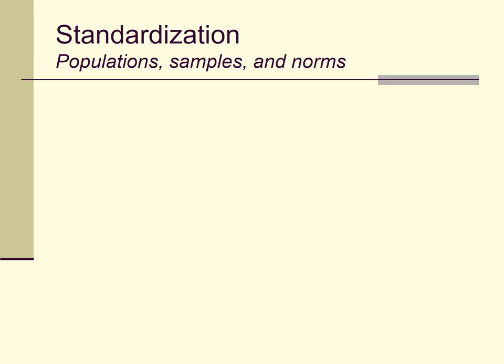Assuming a test developer has identified the population they're studying, they know they can't gather all members of that population to administer the test — that might be practically or even in principle impossible. So they instead choose to sample from that population to estimate important features of the distribution of scores — parameters like the mean, the standard deviation, the interquartile range. How interpretable these estimates are as norms has a lot to do with the nature of the sampling used.